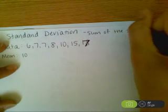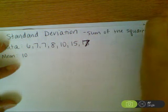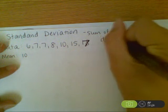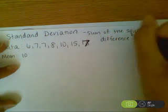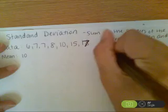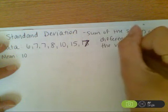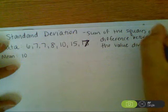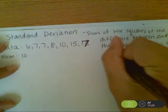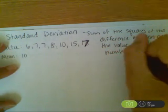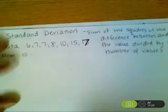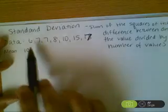squares of the difference between the mean and the value divided by the number of values. When you're done with that, you take the square root. That is a lot of words, so I'm going to show you how to break this down numerically.